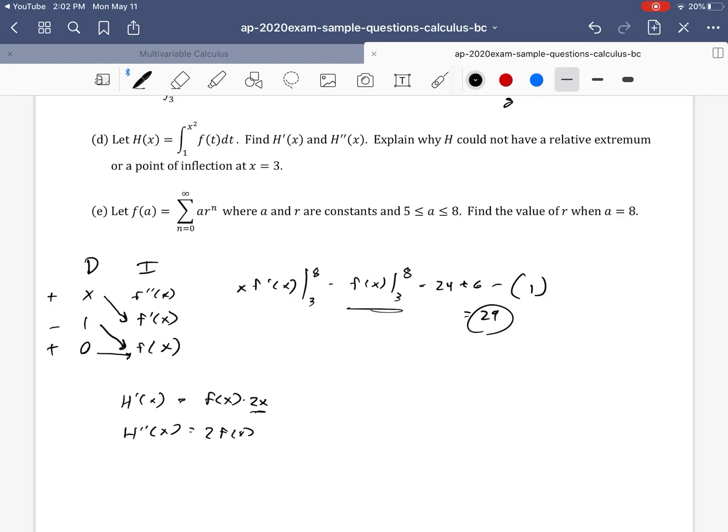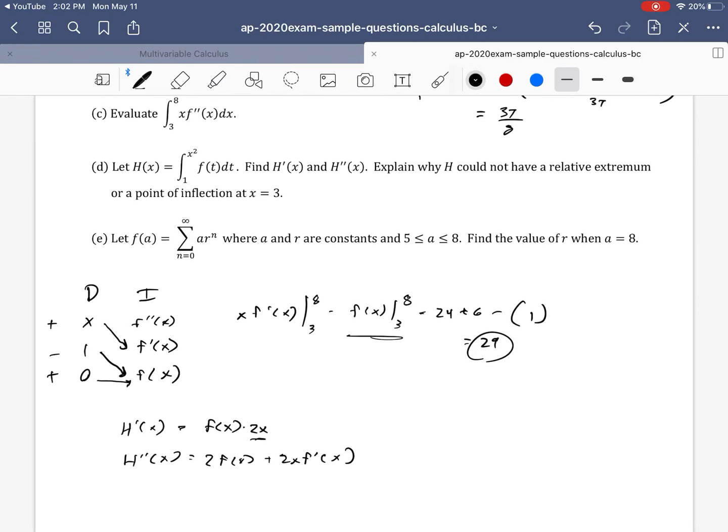Now h double prime of x. Now notice we need the product rule. So h double prime of x, I'll differentiate that first. That's 2 f of x plus 2x f prime of x. Okay, we've done that.